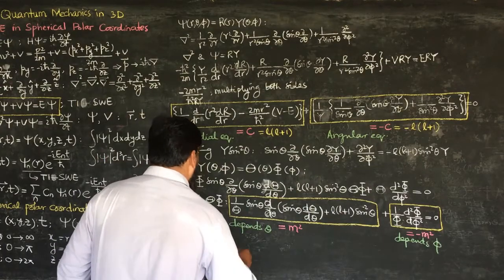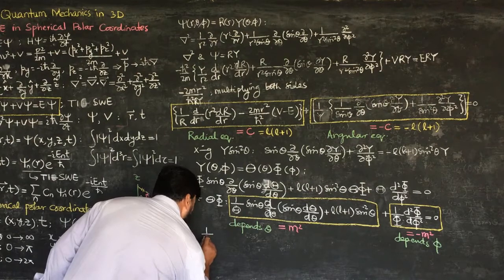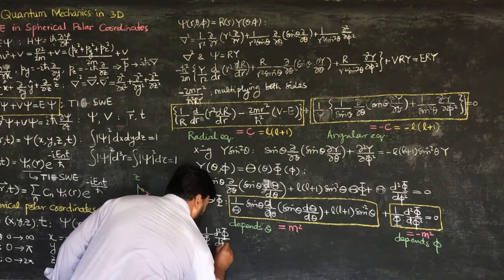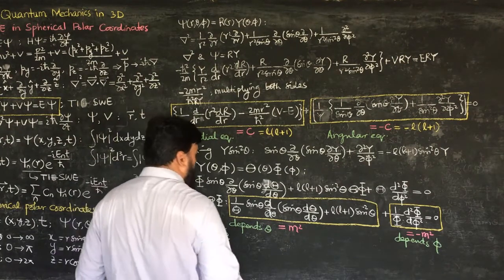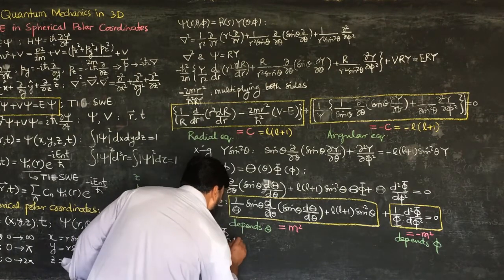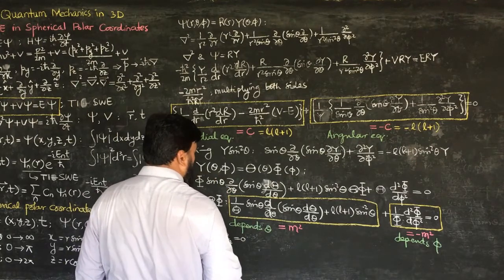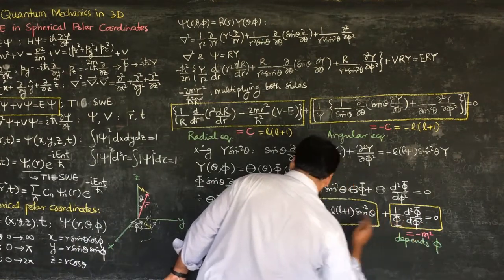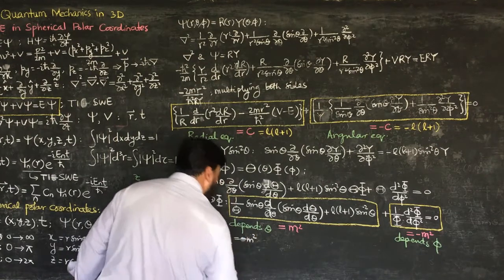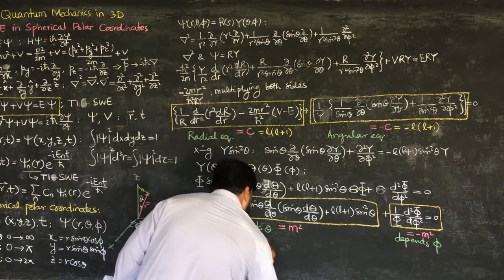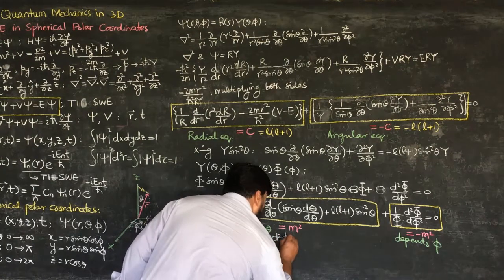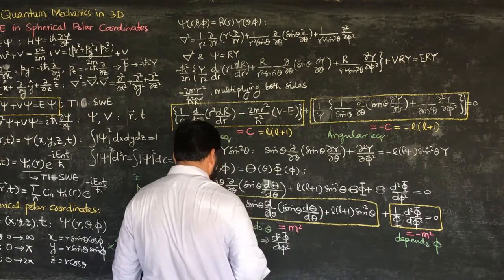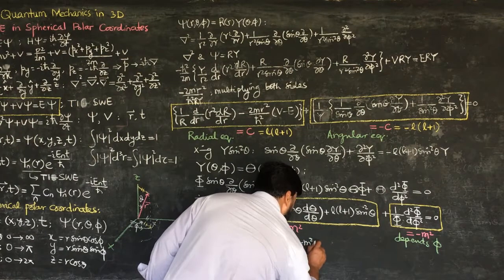We start with the equation: (1/Φ) d²Φ/dφ² = 0, but this is actually equal to minus m squared. This implies that d²Φ/dφ² = −m²Φ.